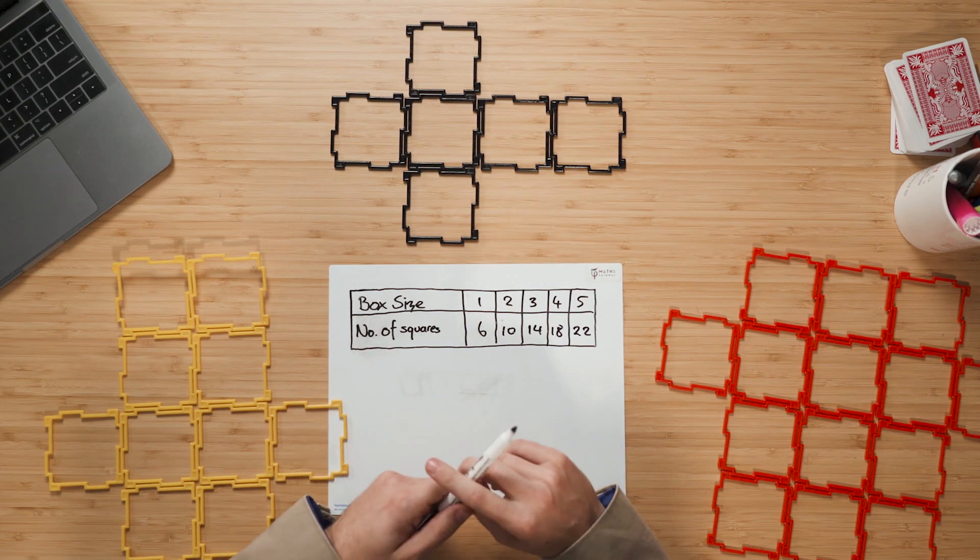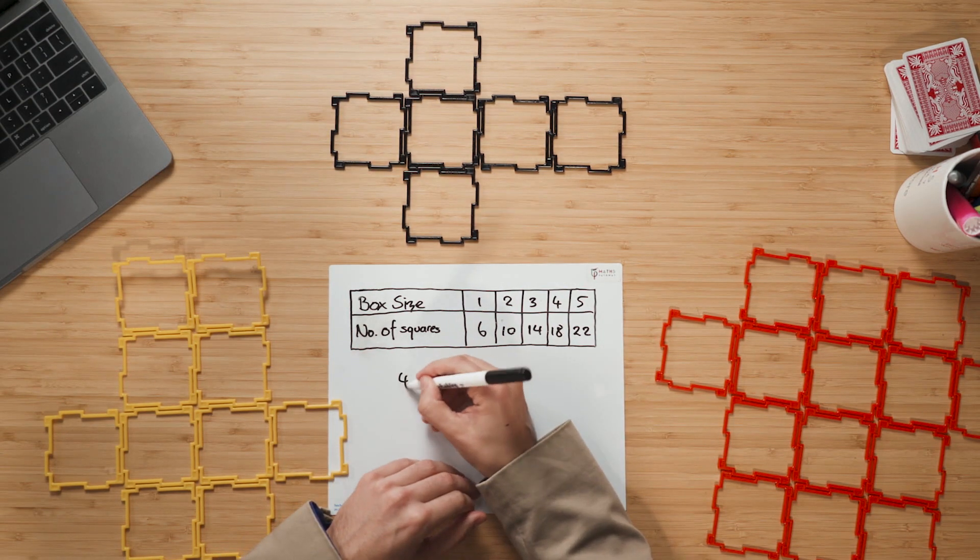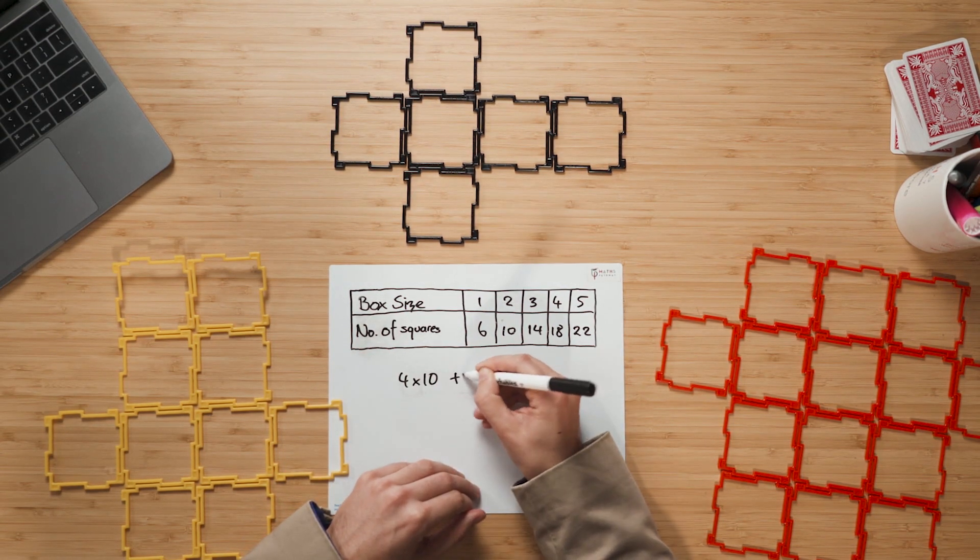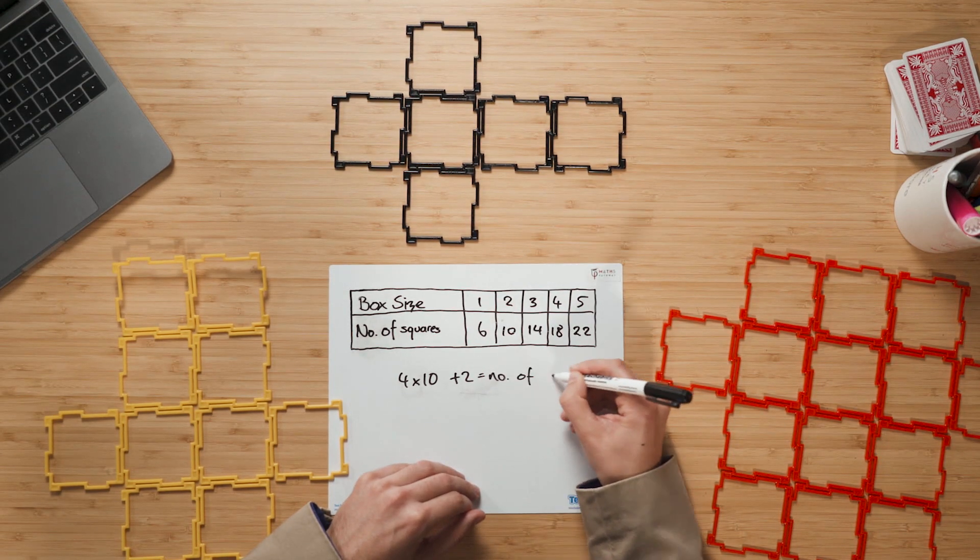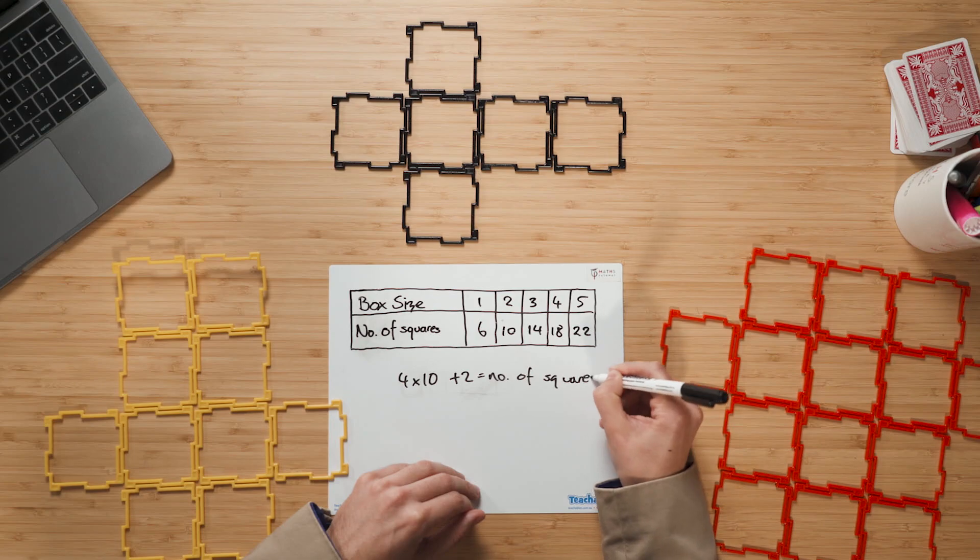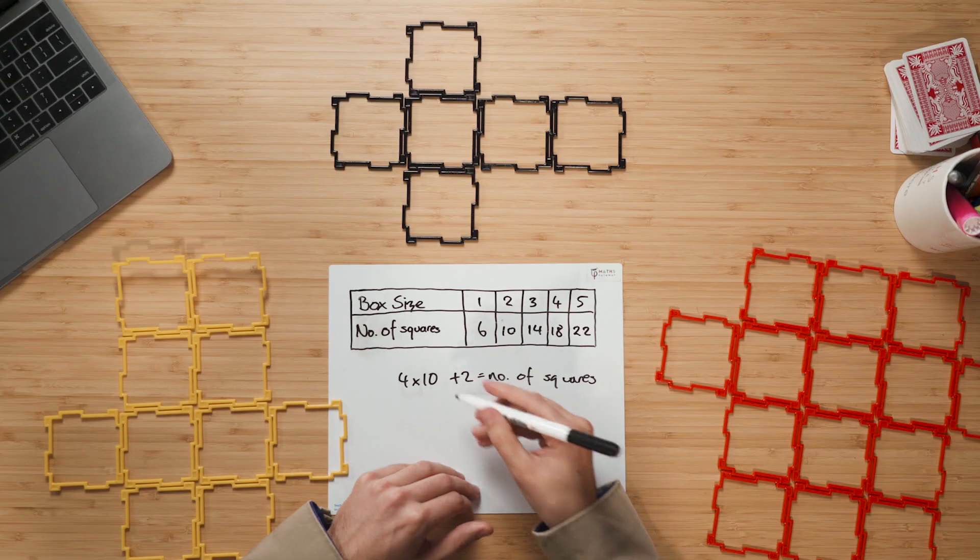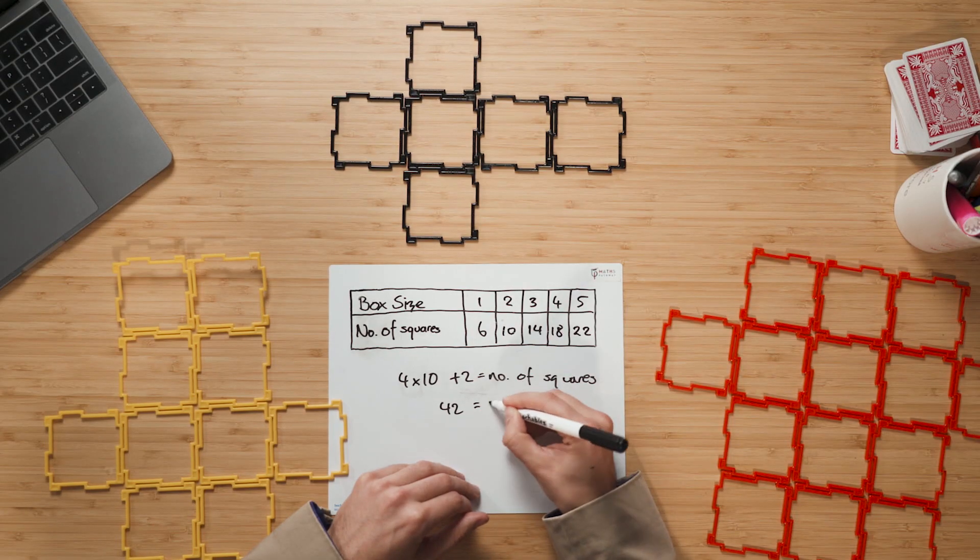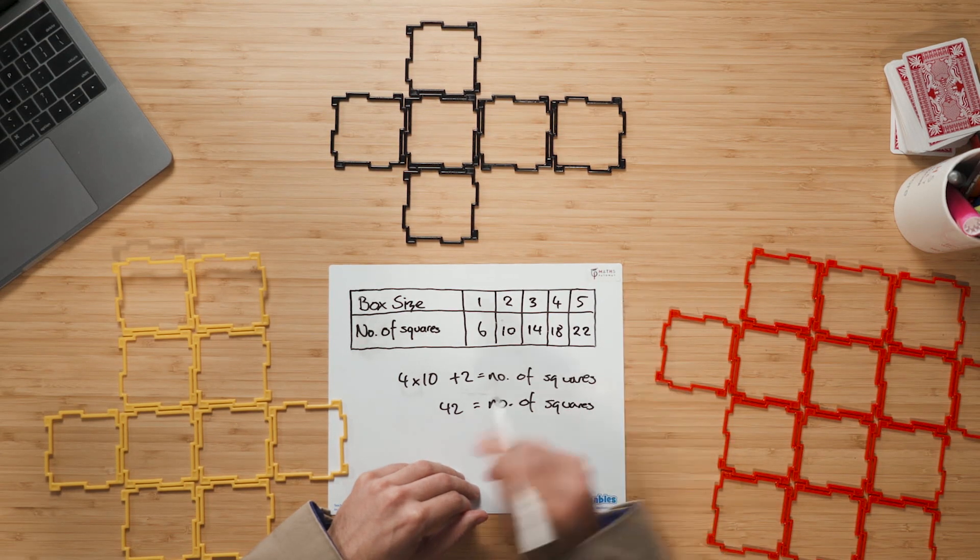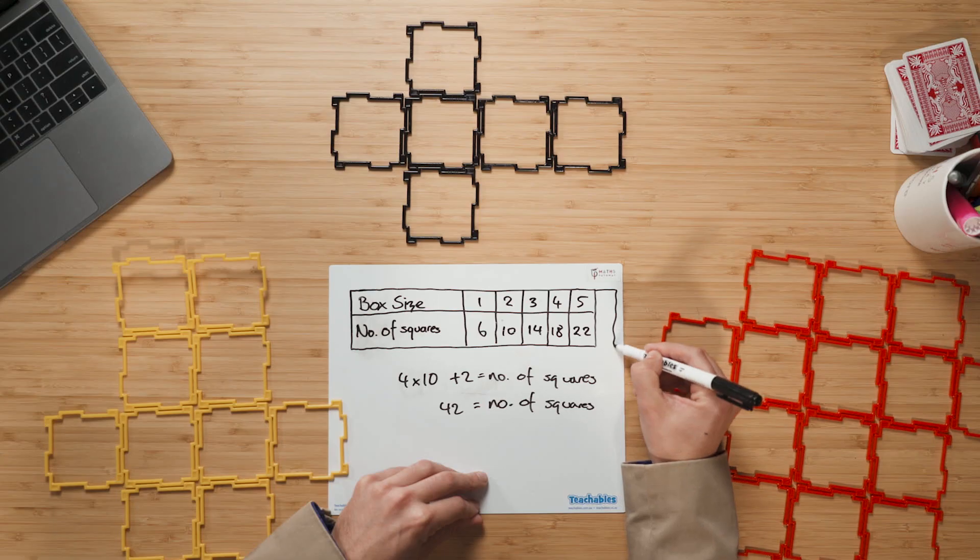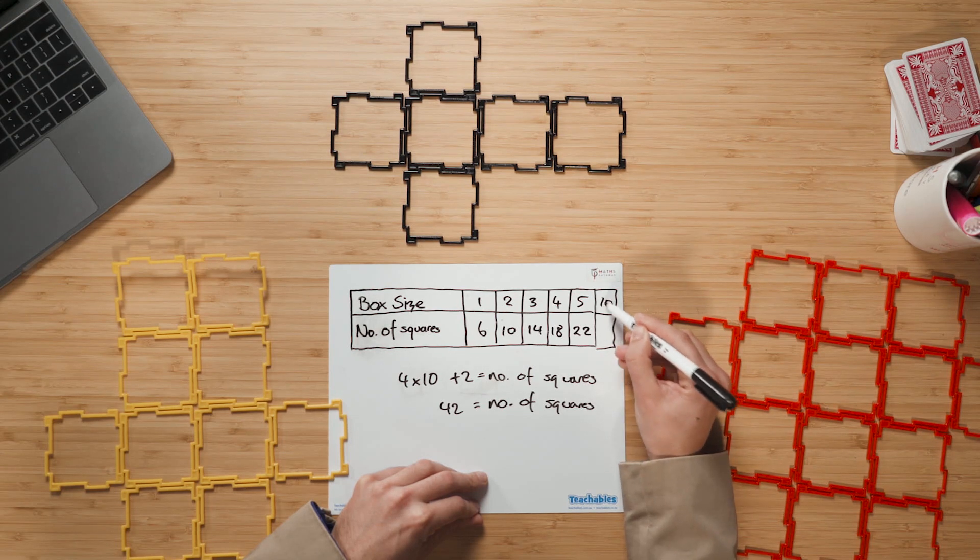So if we have four rows of ten and two on the ends, that's going to be four times ten, and then add the two to find out the number of squares. So of course, for a size ten box, we will have 42 squares. And at this point here, we can simply put it on the table like this. I love this table tool because it's a great way to help us keep track of our thinking and look back for patterns in our results.